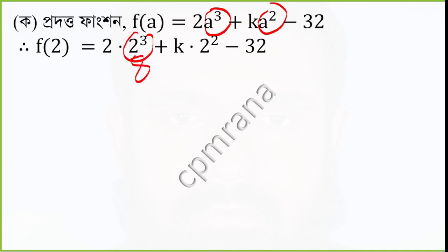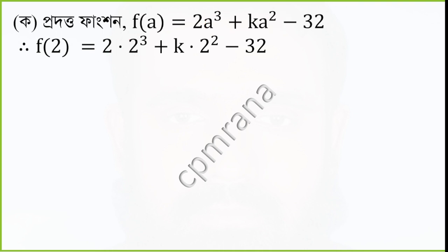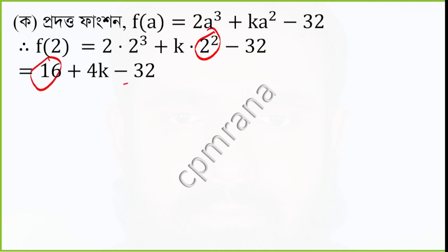So we substitute: 2 cubed is 8, and 2 squared gives 4, so we get 8 plus k times 4 plus 16.